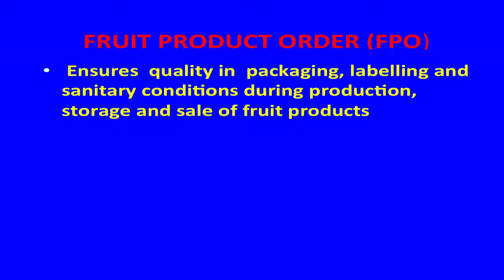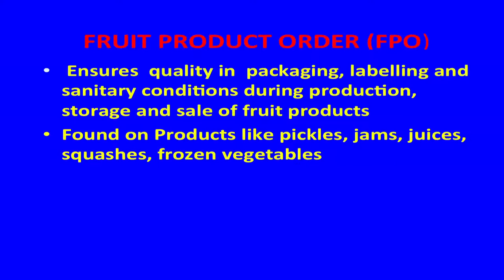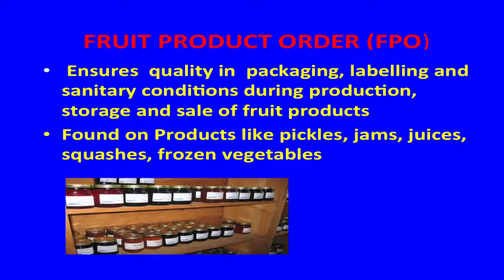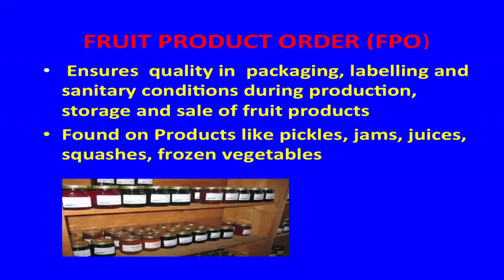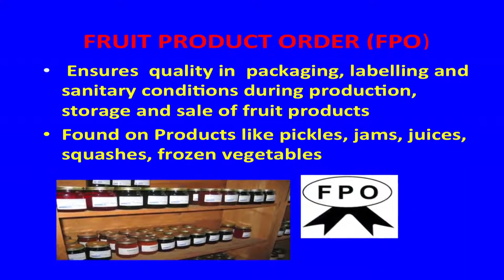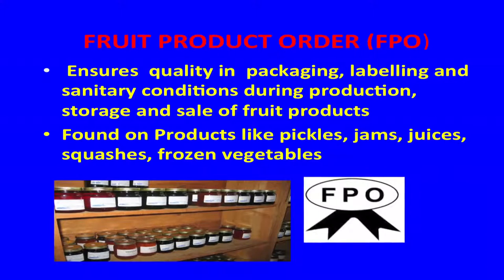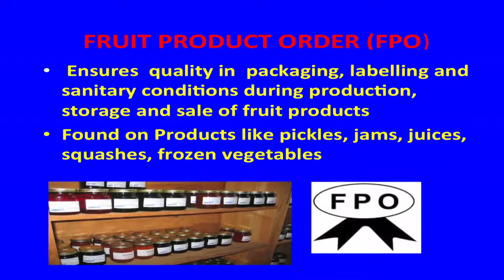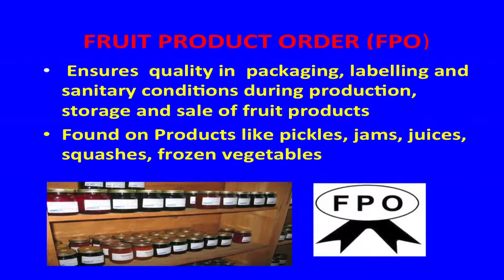Food Product Order, that is FPO, is applicable to all products containing fruit. It ensures the quality of fruit-containing products. Products like pickles, jams, juices, squashes, and frozen vegetables and fruits sold in the market carry the FPO mark. As you can see in the picture, the symbol of the FPO mark is shown along with products like jams, jellies, squashes, and pickles.